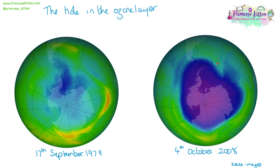This is a problem because it means that the life under that area is not being protected from UVB. So if the ozone is not there, it cannot protect us.